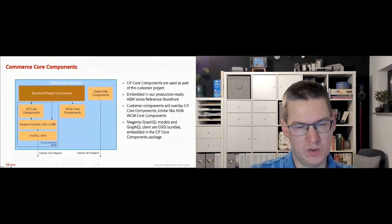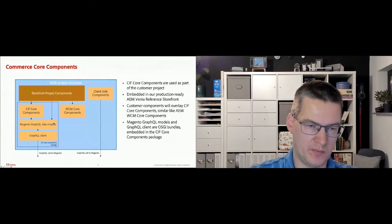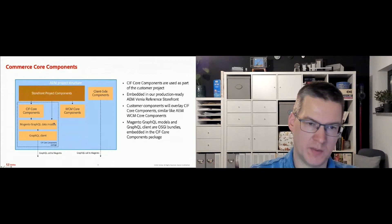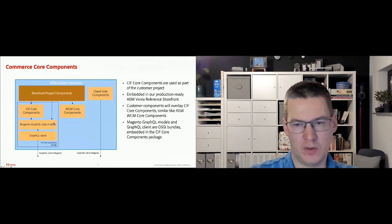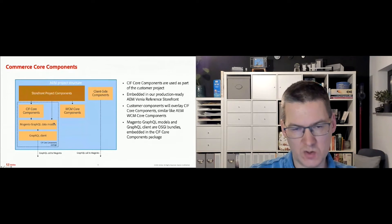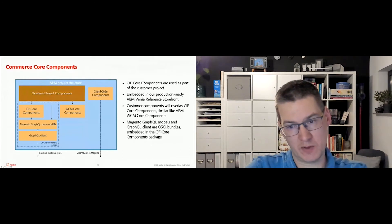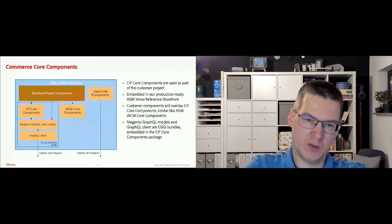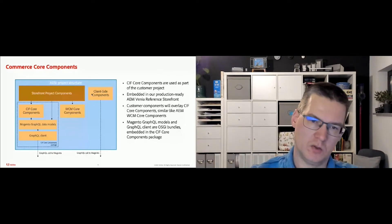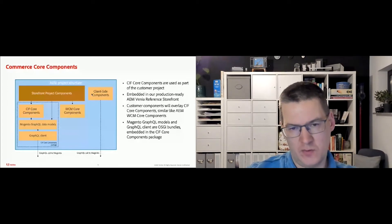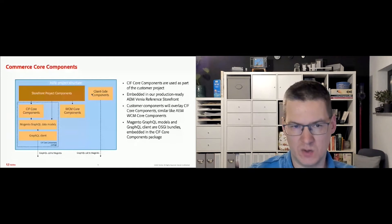These core components are used similar to the sites components by a project — either you have simple proxy components which don't add extra logic, where you can put your styling extensions and HTML, or you have the option to build your entire custom component which also uses the data model and the GraphQL client. For the client-side part, these components are built using React and JavaScript. We share a lot of logic and code with the Magento team, which they use for the Magento PWA, to avoid duplicating effort.